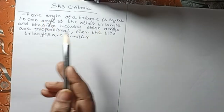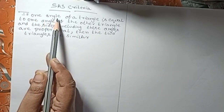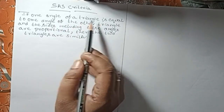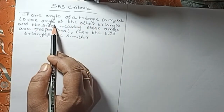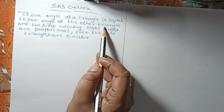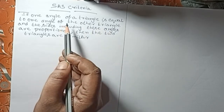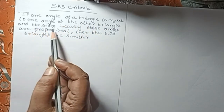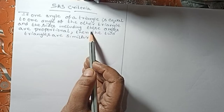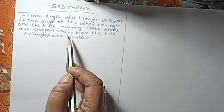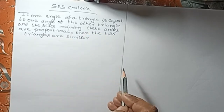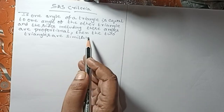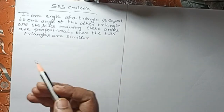What is the SAS criterion? If one angle of a triangle is equal to one angle of another triangle, and the sides including these angles are proportional, the two triangles are similar.